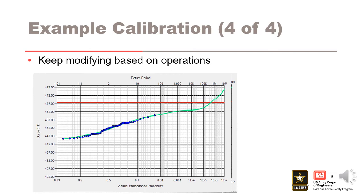Now we have a reservoir routing that agrees with the observed events, giving us more confidence in our model. Revisiting our estimate of the annual exceedance probability for the top of flood pool elevation of 462.5 feet, given our calibrated model results, the estimate changed from about 4e-6 to about 8e-4. That is a change of more than two orders of magnitude, which could have a significant impact on a risk estimate. This is why it is important to calibrate the model to obtain good agreement with the observed events.